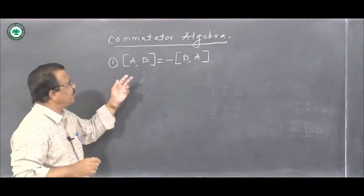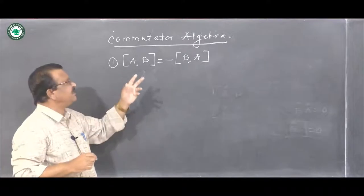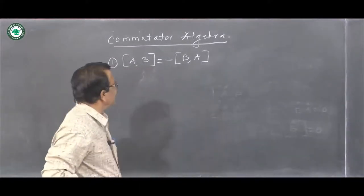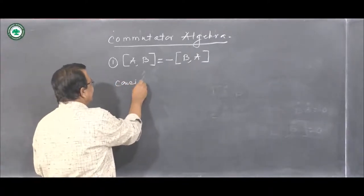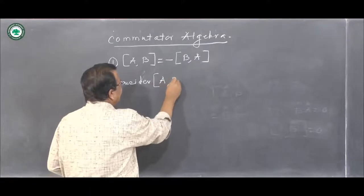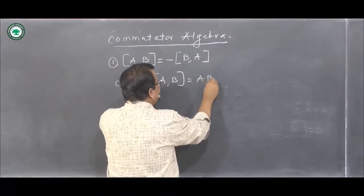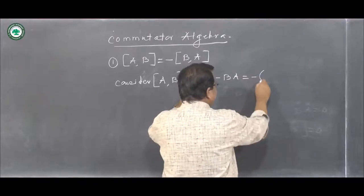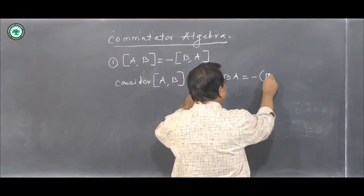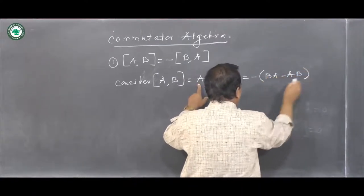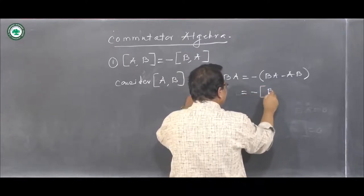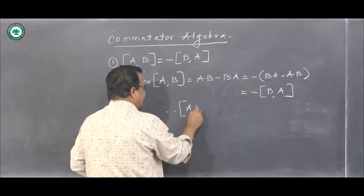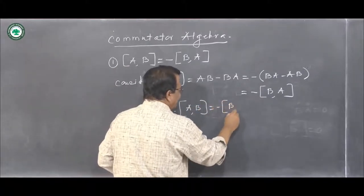The first result is: [A, B] equals minus [B, A]. This means that when you reverse the order of operators within the commutator, the sign of the commutator reverses. Consider the left-hand side: [A, B] by definition is AB minus BA. This can be written as minus (BA minus AB), which is equal to minus [B, A]. Therefore [A, B] equals minus [B, A].